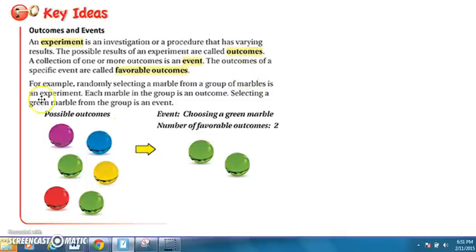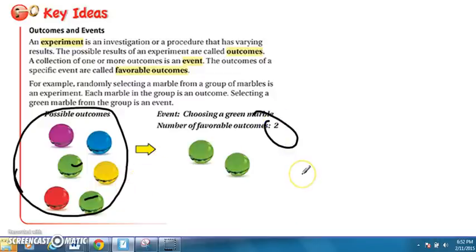For example, let's think about a group of marbles we see here. So let's assume these marbles are in a bag. If I want to choose a green marble, that's my event, choosing the green. If I want to think about favorable outcomes, those are the outcomes of that specific event. So in this case, I have one, two green marbles, so I have two favorable outcomes. I can pull one or two of those green.